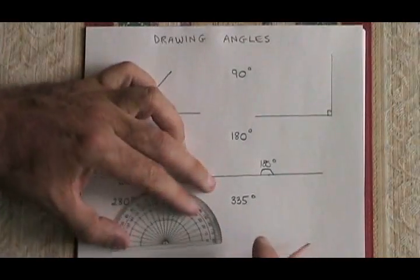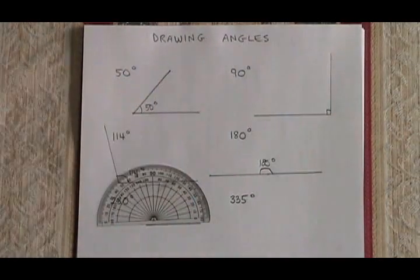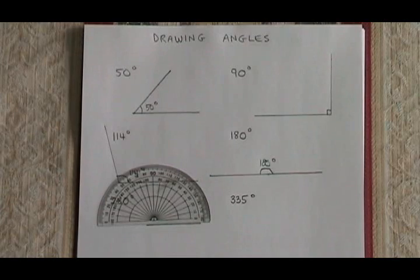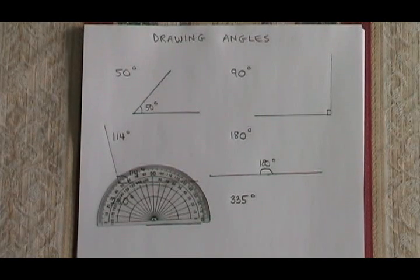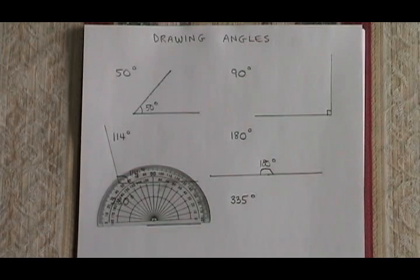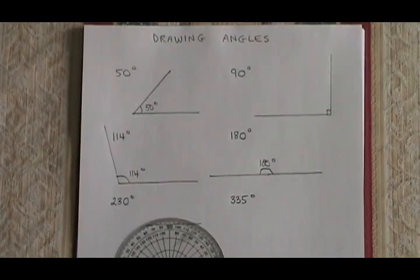you have to know that the angle of a circle is 360 degrees. So what we can do is we can say 360 degrees minus 230 is equal to 130.